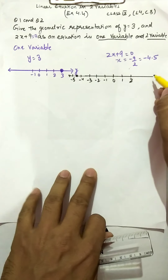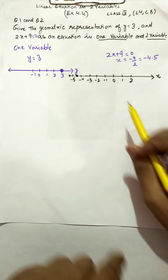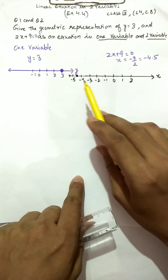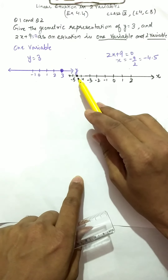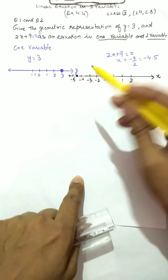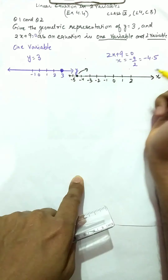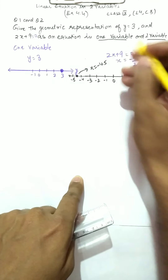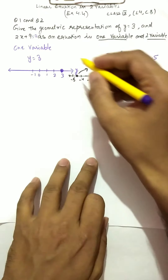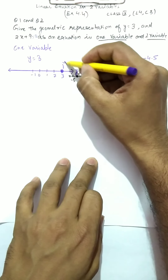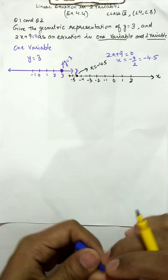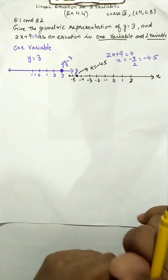You can mark this on the number line representing variable x, and −4.5 is where the point lies. You can draw the arrow to represent x = −4.5, and for the first equation you write y = 3. This is the graphical representation of both equations in one variable.